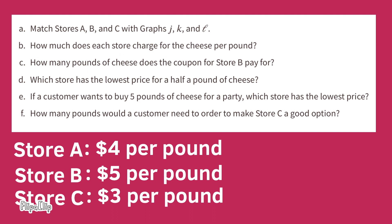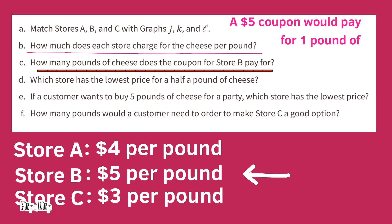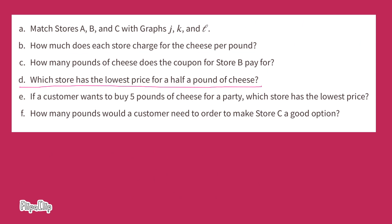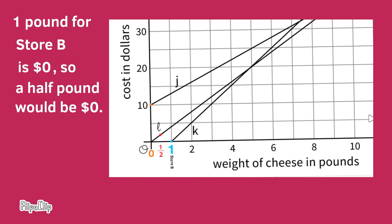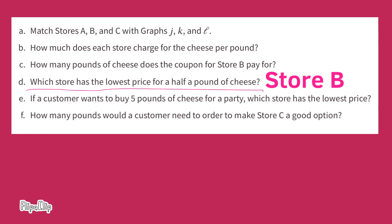How many pounds of cheese does the coupon for Store B pay for? A five dollar coupon would pay for one pound of cheese because at Store B a pound of cheese costs five dollars, the same amount as the coupon. Which store has the lowest price for a half pound of cheese? With the five dollar coupon, one pound at Store B costs zero dollars, so a half pound would also be zero dollars. Store B has the lowest price for a half pound of cheese.